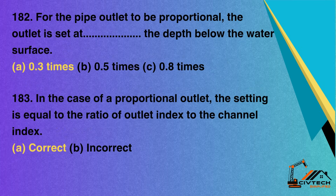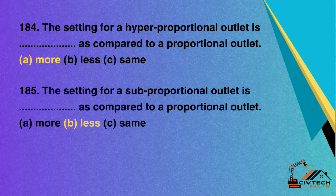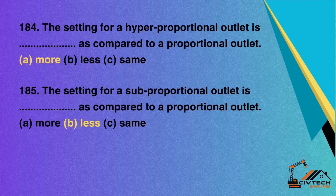Question 182: For the pipe outlet to be proportional, the outlet is set at what depth below the water surface — A. 0.3 times; B. 0.5 times; C. 0.8 times. Correct option: A. 0.3 times. Question 183: In the case of a proportional outlet, the setting is equal to the ratio of outlet index to the channel index — A. Correct; B. Incorrect. Correct option: A. Correct. Question 184: The setting for a hyperproportional outlet is, as compared to a proportional outlet — A. More; B. Less; C. Same. Correct option: A. More. Question 185: The setting for a subproportional outlet is, as compared to a proportional outlet — A. More; B. Less; C. Same. Correct option: B. Less.